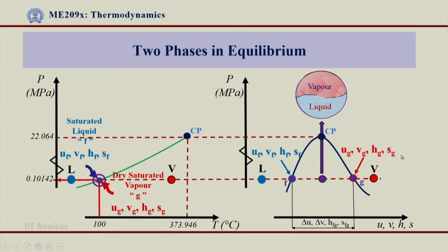Different properties are given over here: thermal energy, specific volume, enthalpy, and entropy. Anything that lies between UF and UG, VF and VG, HF and HG, and SF and SG, we know that it is in two phase zone.